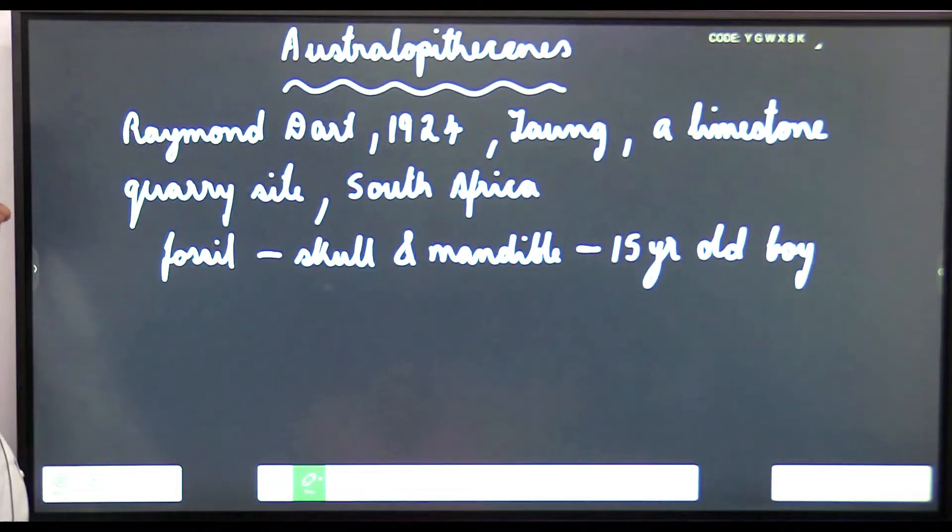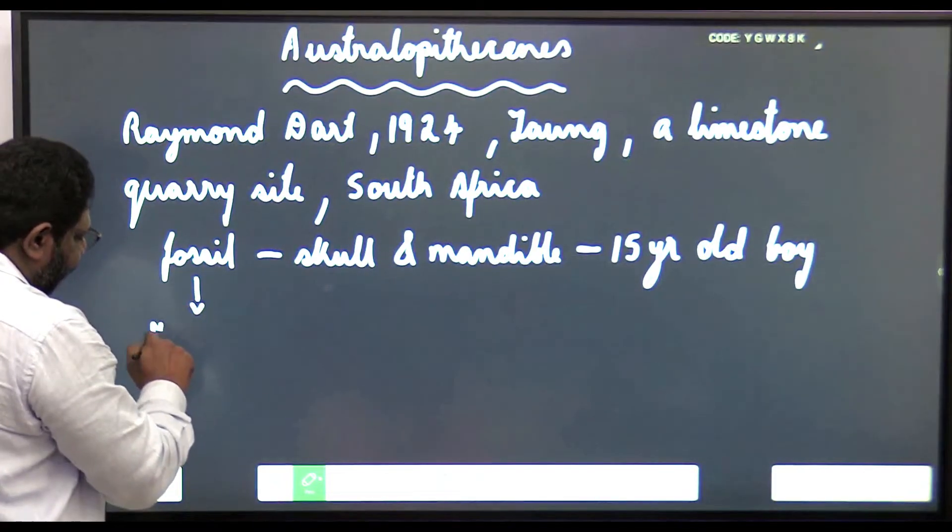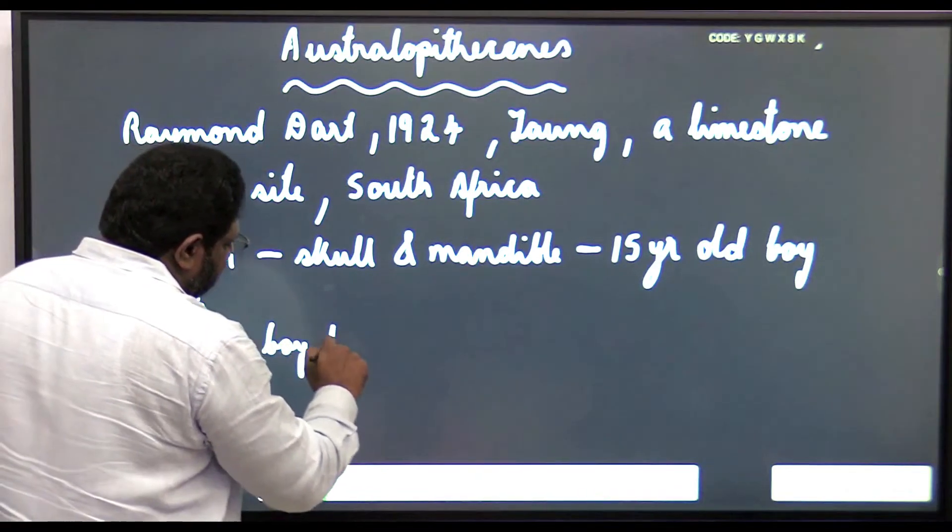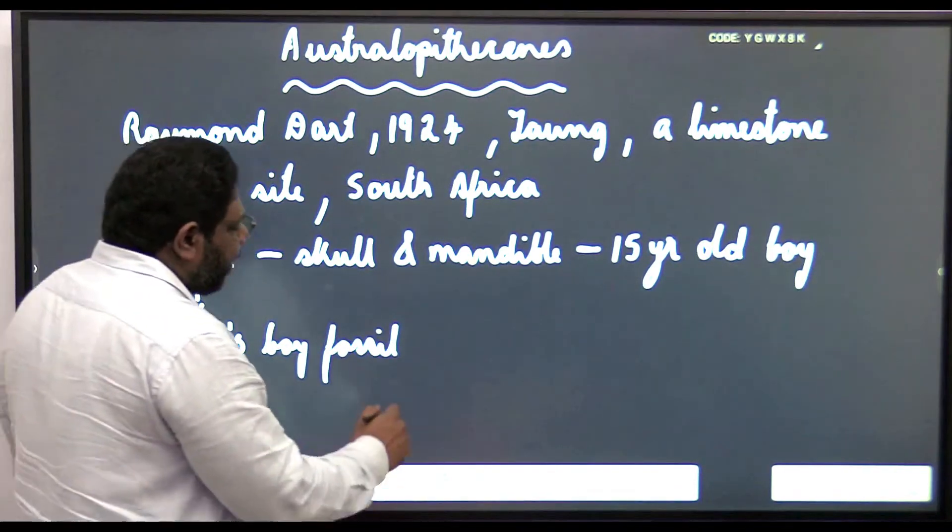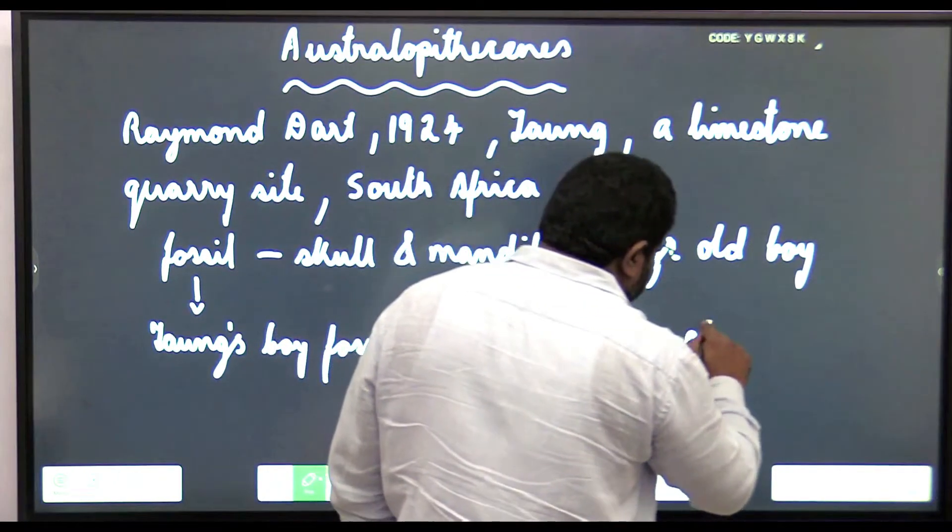He named this fossil as Taung's boy fossil, which is technically Australopithecus africanus.